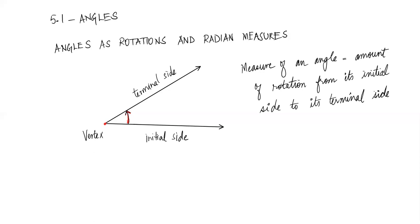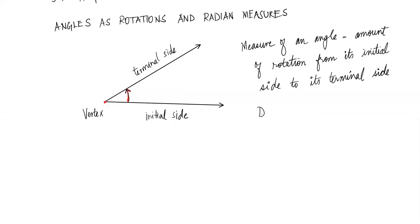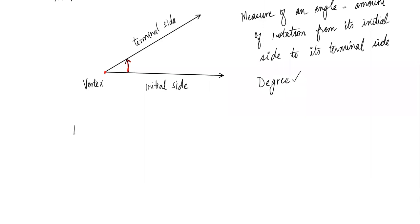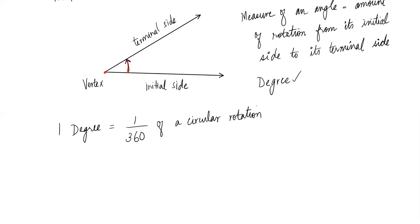The most familiar unit of angle measure is the degree. One degree is one three-hundred-and-sixtieth of a circular rotation. To trace a circle — to start, go all the way around, and come back to the same starting point — you make 360 degrees, because a complete rotation takes 360 degrees. So one degree is one out of 360, which is the definition for one degree.